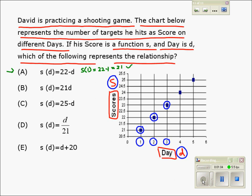Now let's test this relationship for day 2. For day 2, the value of S becomes 22 minus 2, which equals 20. But 20 isn't right, as we can see in the chart. It should be 22. Therefore, this relationship in option A is not right.